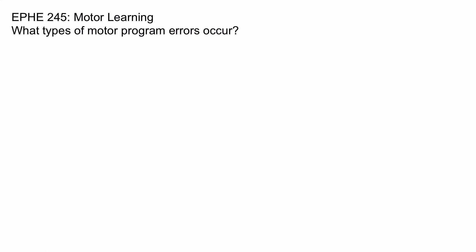What types of motor program errors occur? Simply put, if you execute a motor program, it doesn't always work out. You miss the target and you fail to achieve your movement goal. So why do we have motor program errors? There are three main sources of error.